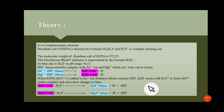The disodium salt of EDTA is denoted by the formula Na2H2Y, and H2Y²⁻ is the complex-forming ion. The molecular weight of disodium salt of EDTA is 372.25. The Eriochrome Black T indicator is represented by the formula H2D⁻. It is blue due to H2D⁻ in the pH range 7 to 11.